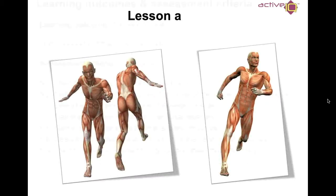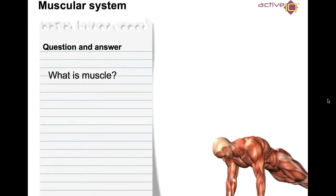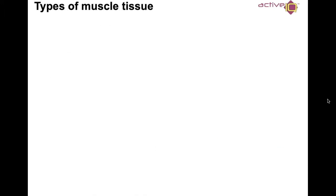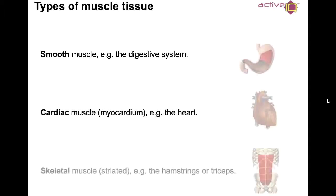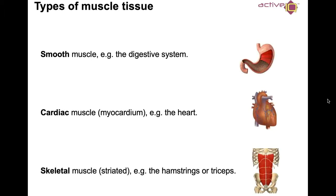So the first section — what is a muscle? Quick question for you: what is a muscle? Hopefully you've looked at different types of muscle tissue. So we have smooth muscle, found for example in the digestive system; cardiac muscle, or myocardium, found in the heart; and skeletal muscle, which is striated — for example the hamstrings or triceps — and you can see the diagrams to the right-hand side.